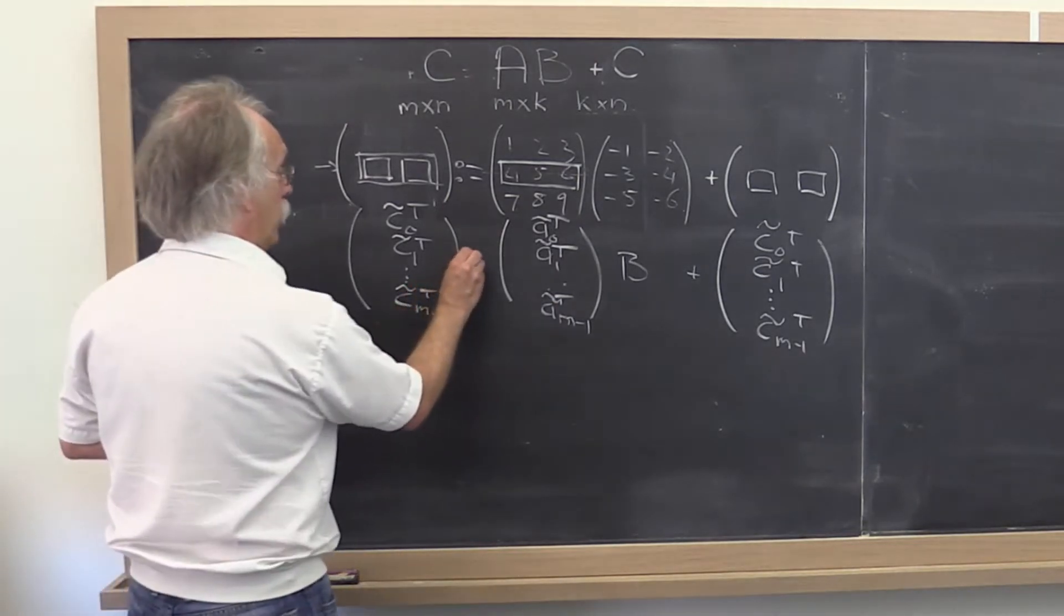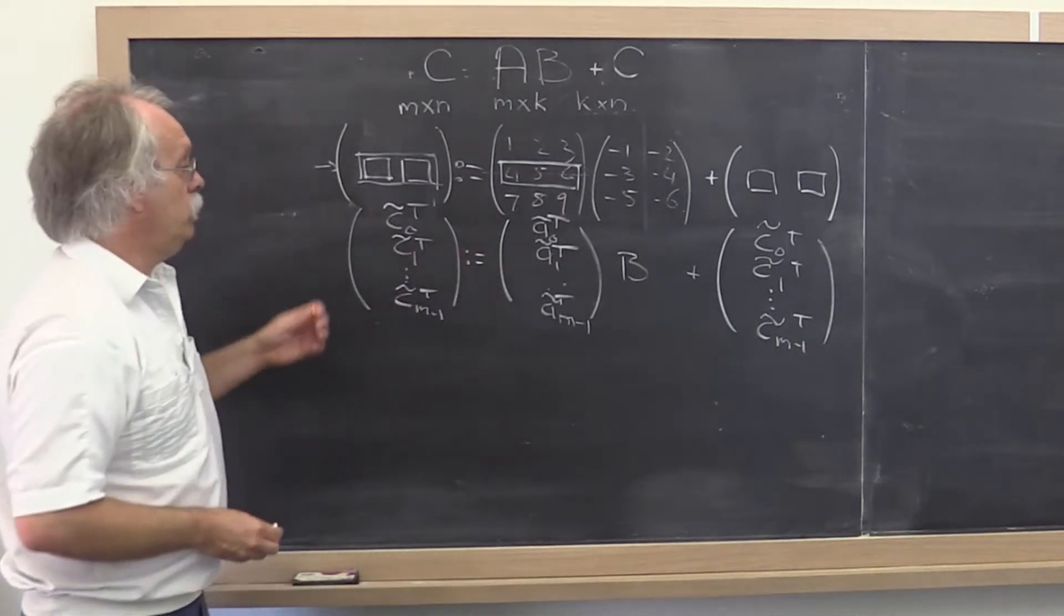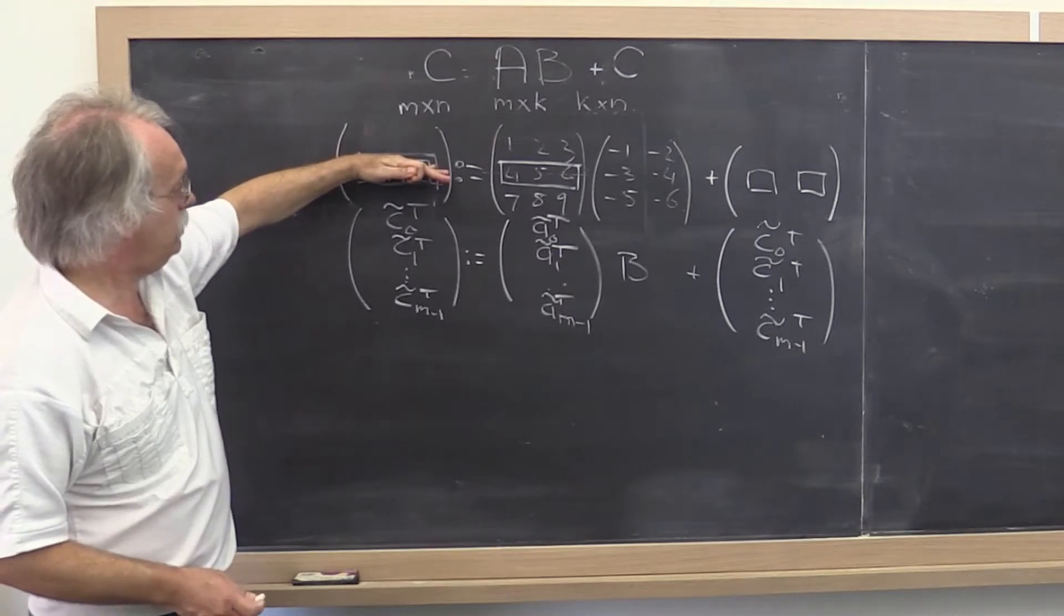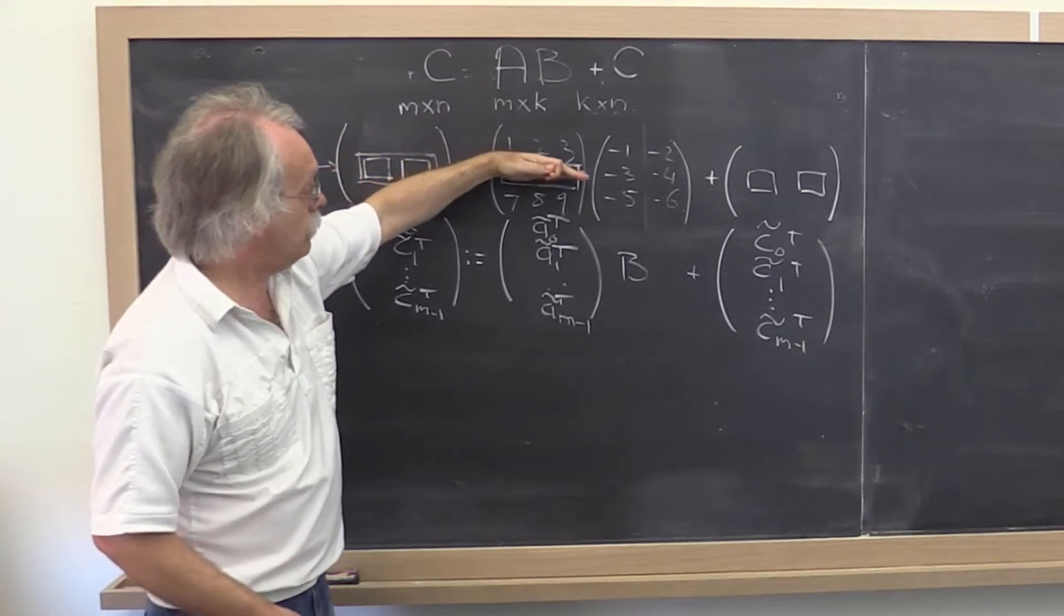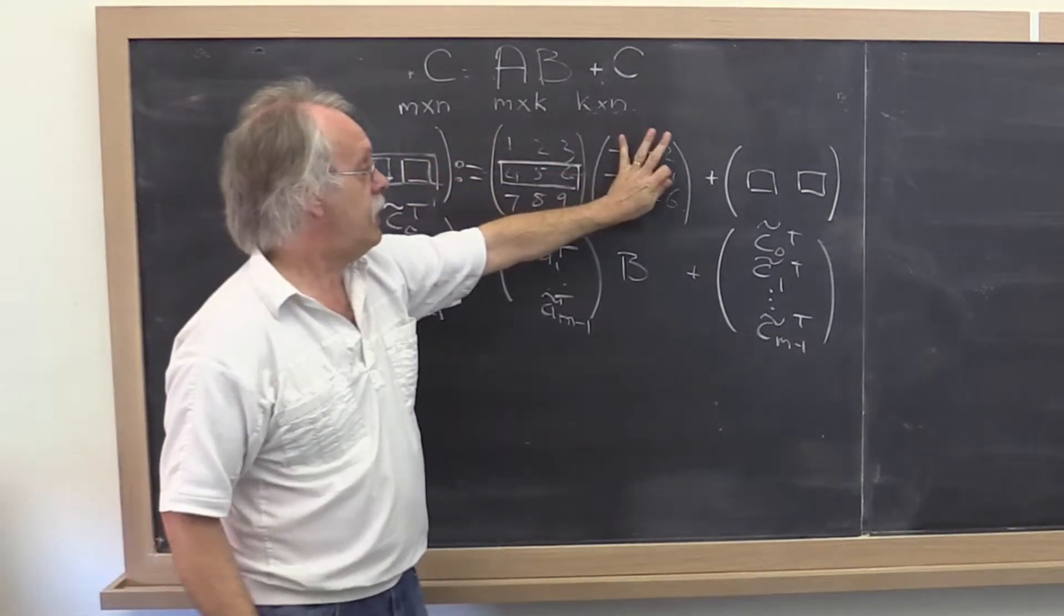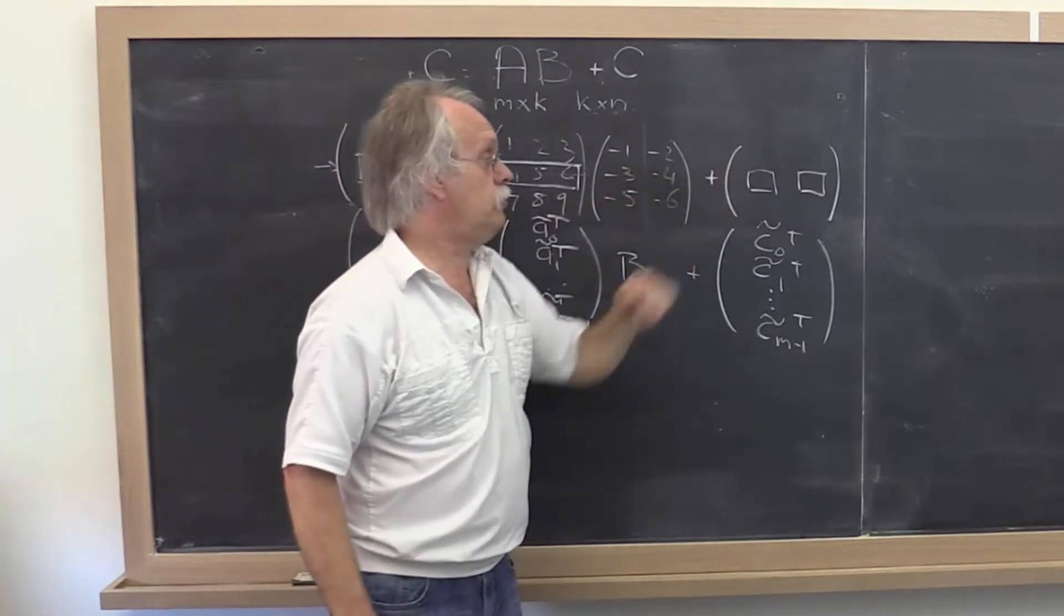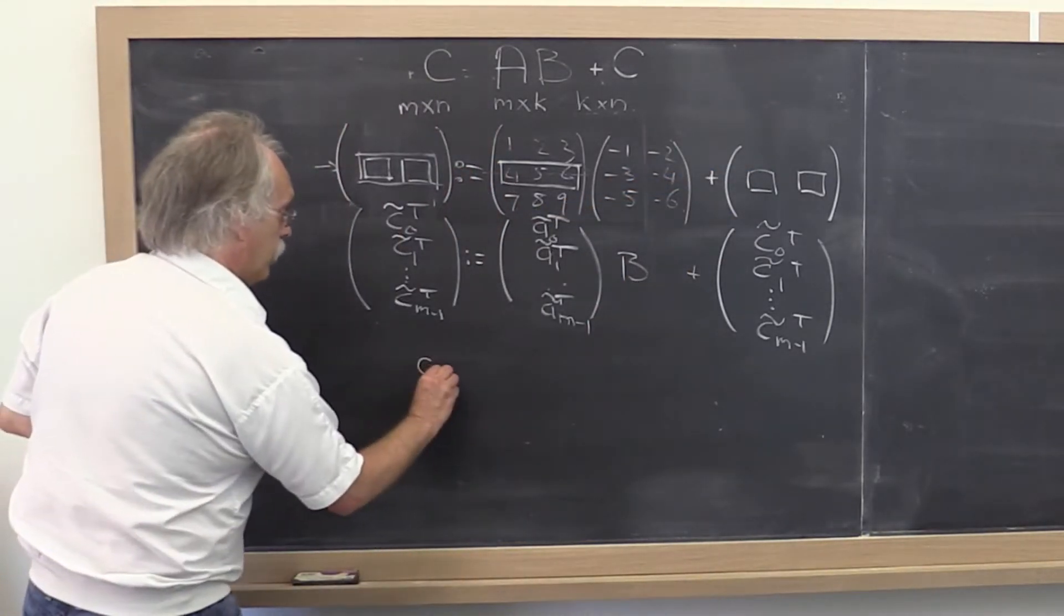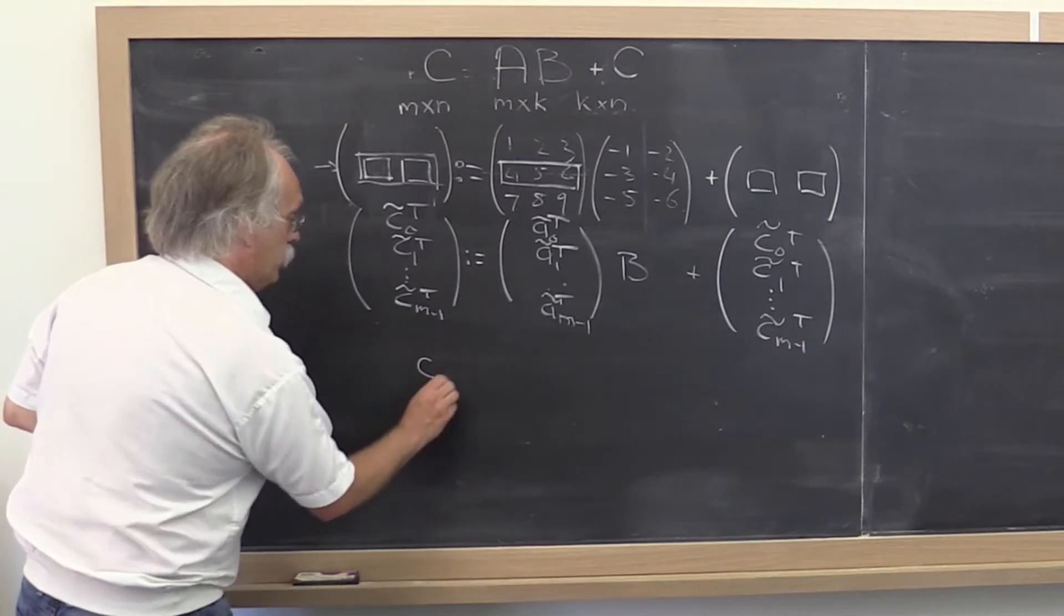So this is now how we compute. And what we just reasoned is that a typical row in C is computed as the corresponding row of A times the matrix B added to that row of C.